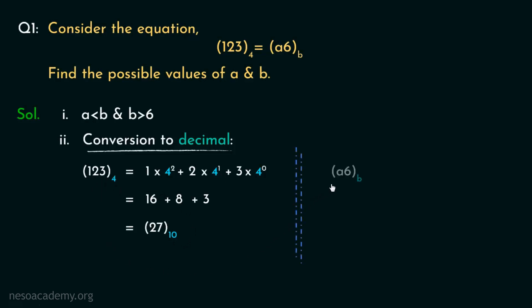Now let's convert (a6) base b to decimal. We will perform the same drill. We will take the digits a and 6. Now the base being b, the place values are b⁰ and b¹. Now b⁰ is 1, so this in decimal would be ab plus 6. Now we have both of them in decimal, so now we can actually do the comparison. So, if we subtract 6 from both the sides, we obtain the value of ab as 21.